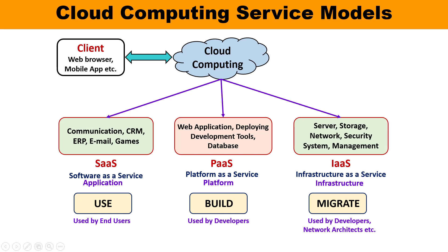From this diagram, you can get a brief idea of how it works and what each individual service model means. The client directly interacts with the cloud via web browsers and mobile applications. Infrastructure as a Service means infrastructure is available — like servers, storage, networks, security systems, and management. This infrastructure can be used by developers and network architects, such as for migration.